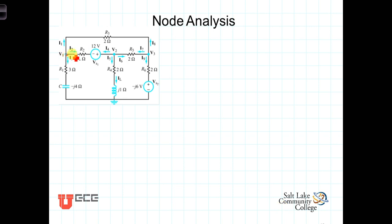In this circuit we've got one, two, three, four essential nodes. Again, an essential node is the node where three or more branches are connected. We choose one of these nodes to then serve as our reference node where, by definition, the voltage is equal to zero. I've selected this node here to be our reference node and so we'll set that voltage equal to zero.